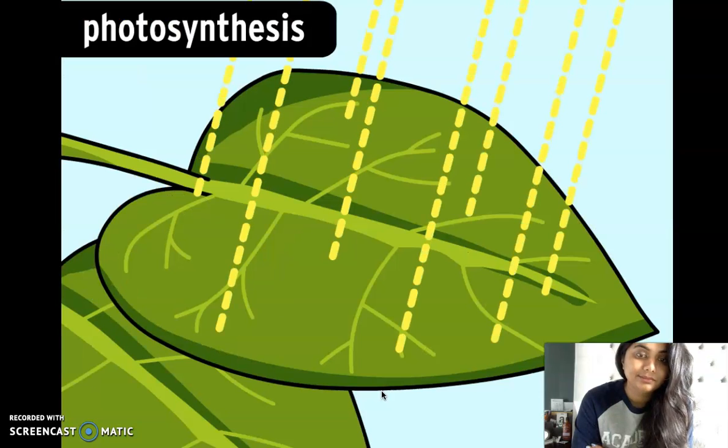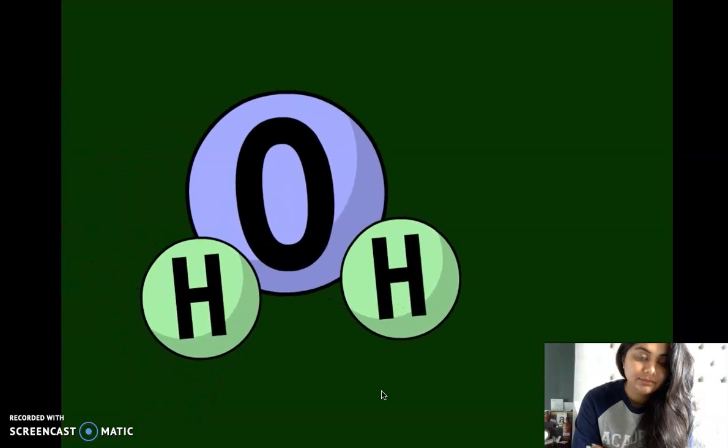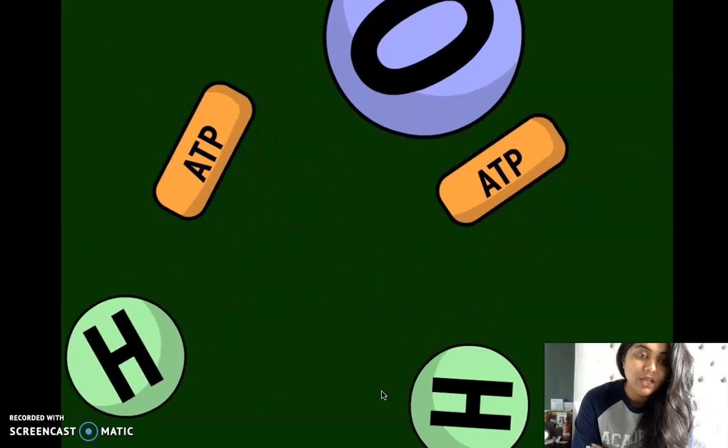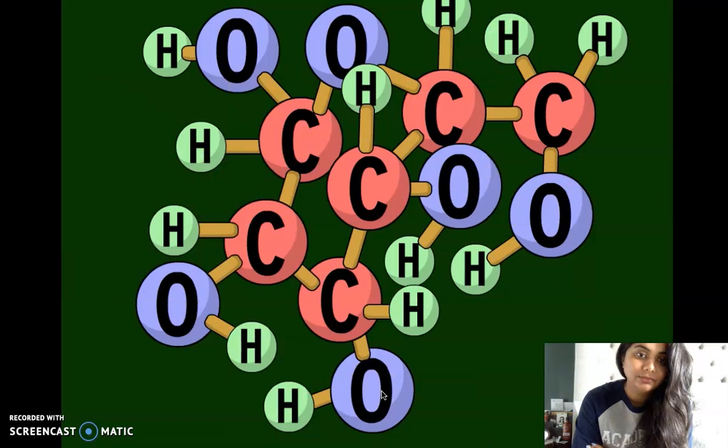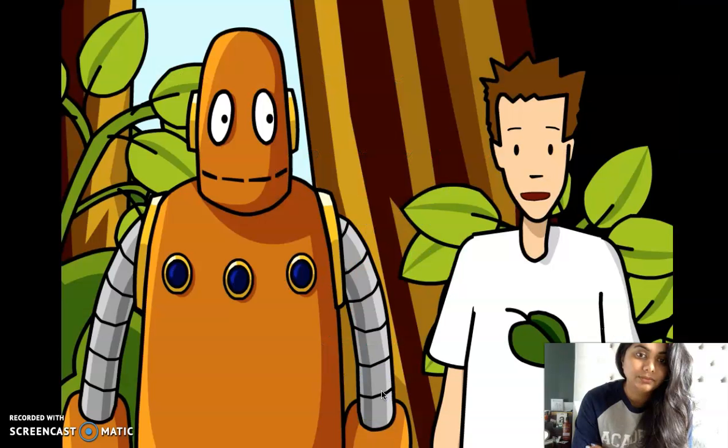In photosynthesis, chlorophyll traps energy from sunlight, storing it as chemical energy. This process splits water molecules into hydrogen and oxygen atoms. The chemical energy is used to create glucose from the hydrogen and carbon dioxide. The glucose dissolves into extra water molecules and gives the plant plenty of food for growth.